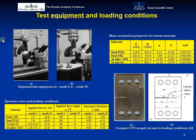The tests were performed on a servohydraulic test system with a maximum capacity of 100 kN, at a frequency of 10 Hz and stress ratio 0.1. Specimen sizes, loading conditions, and main mechanical properties of the tested materials are listed in the tables on the slide.